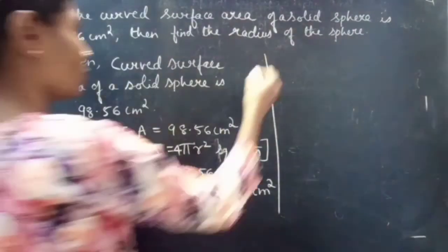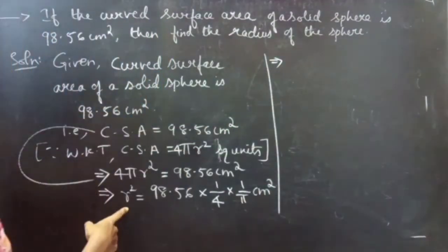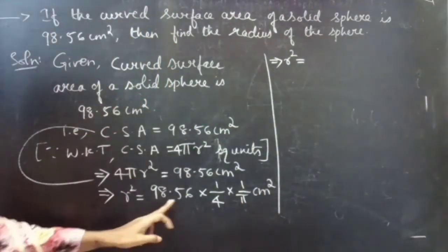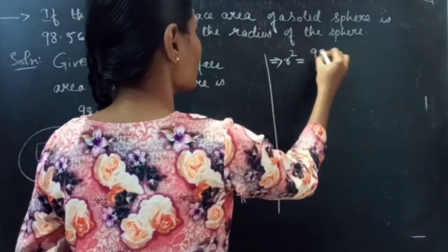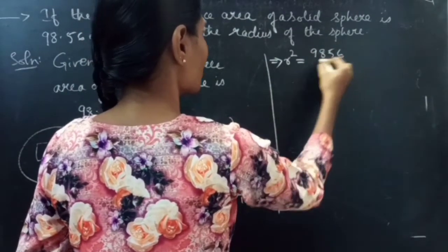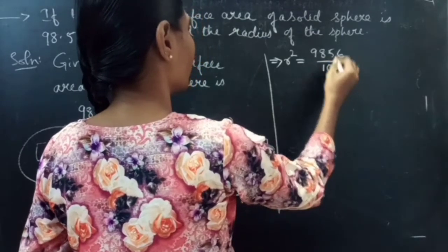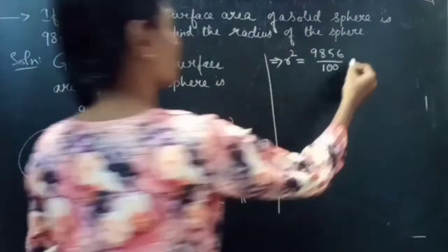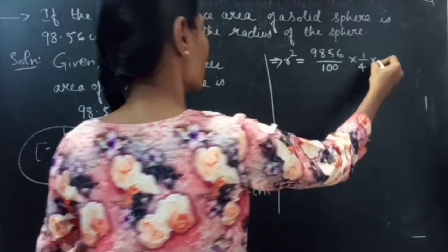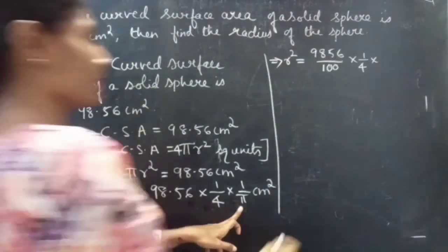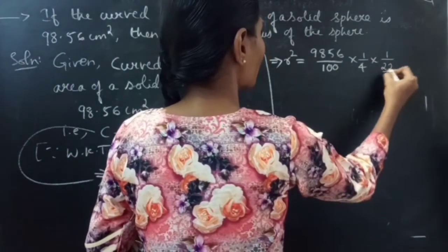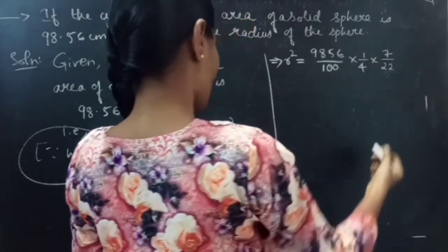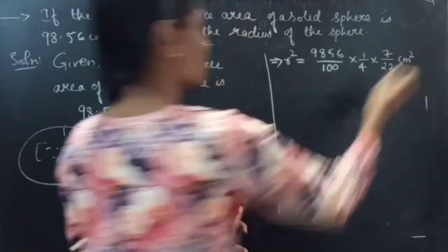So r² equals — we can write 98.56 as 9856/100, into 1/4, into 1/π, where π = 22/7, so that becomes 7/22. We can write it as (9856/100) × (1/4) × (7/22) cm².